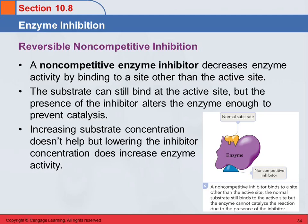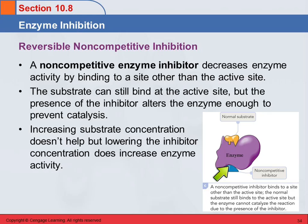There's also non-competitive inhibition. What's really different about this is that the non-competitive inhibitor is going to bind to the enzyme somewhere other than the active site — it's not going to compete with the substrate for the active site. The substrate can still come in, but because this inhibitor is binding somewhere else, it alters the active site enough that it's not going to work. So the substrate can come in and dock, but the docking station is not active because it got bent out of shape or otherwise affected by this non-competitive inhibitor.